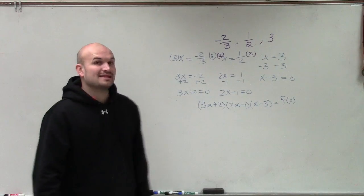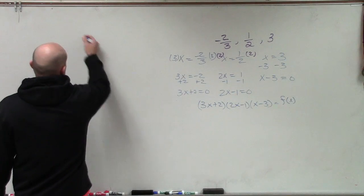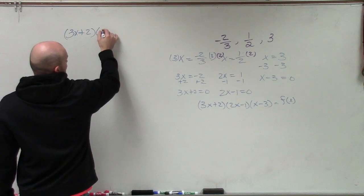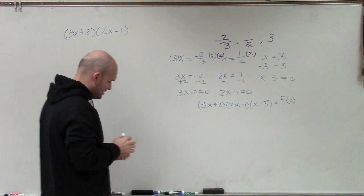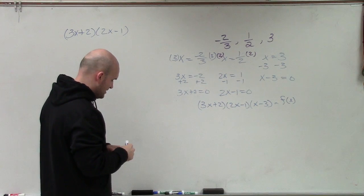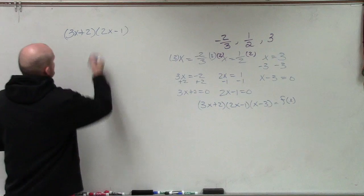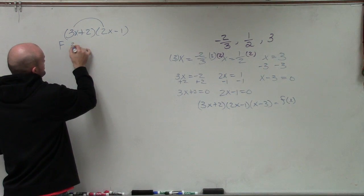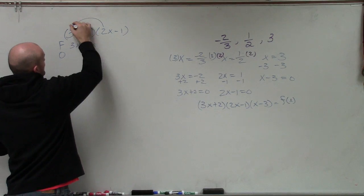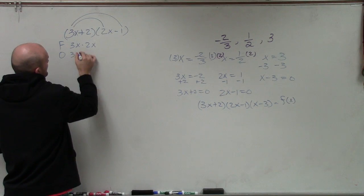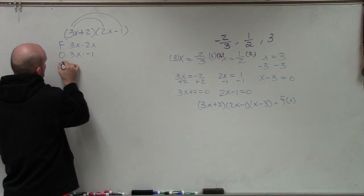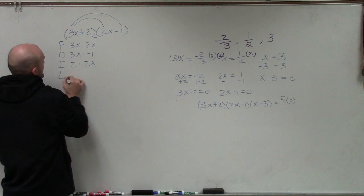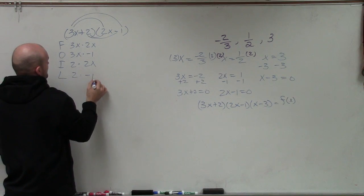So in this case, what I'm going to do is I'm going to multiply these by FOIL. So if I have 3x plus 2 times 2x minus 1, I'll break it out. So in this case, I'm going to do my first two terms, which is going to be 3x times 2x. My outer terms is going to be 3x times negative 1. My inner terms is going to be 2 times 2x. And my last terms is going to be 2 times negative 1.